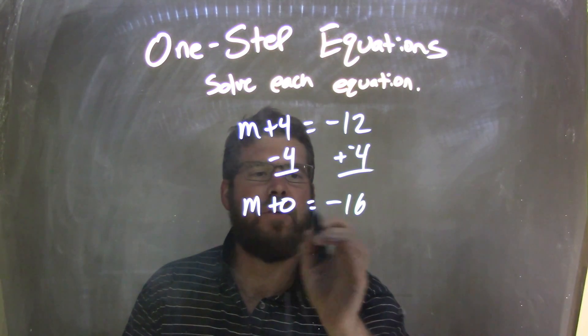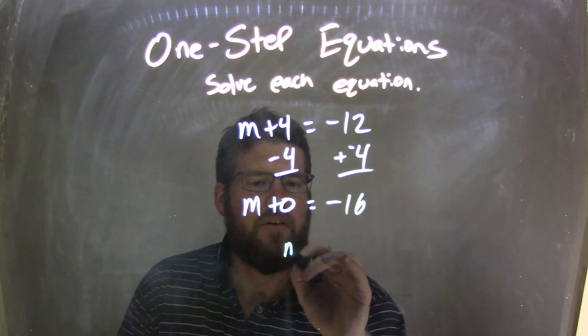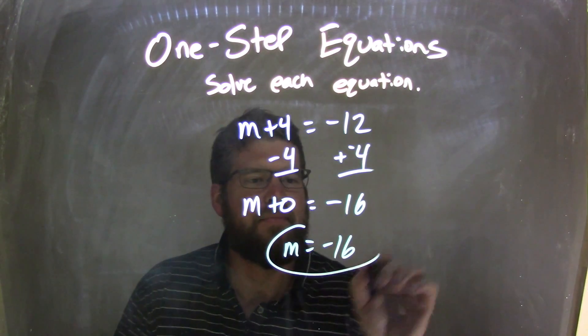Okay? So now if m plus 0 equals negative 16, well, don't need to add 0. So we have m equals negative 16 as our final answer.